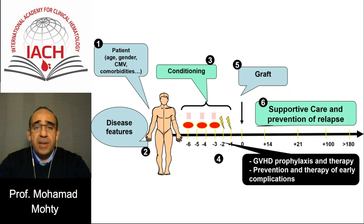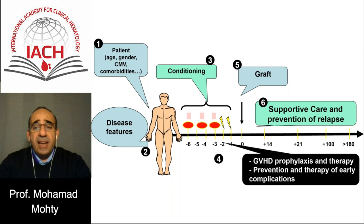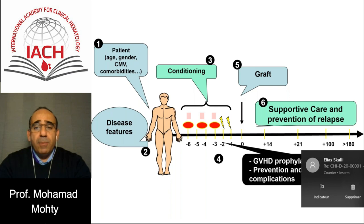These days, we have a very large choice of donors: HLA-identical sibling donors, haplo-identical sibling donors, unrelated donors, mismatched donors, cord blood — you can choose bone marrow, peripheral blood stem cells, and so on. When it comes to complications, GVHD prophylaxis and therapy is a crucial parameter. Supportive care is very important. And more and more, prevention of relapse over the long term is playing an important role. However, we should not neglect some of these rare and early complications occurring after allogeneic stem cell transplantation, and this is why prevention and therapy of these early complications is going to play a major role.